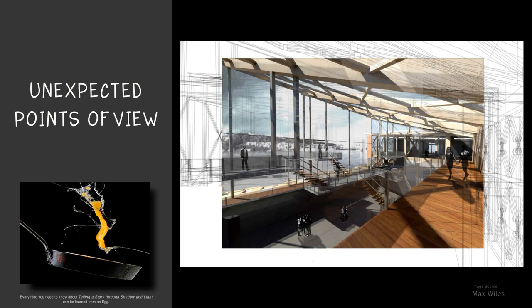In this perspective drawing by student Max Wiles, the composition integrates both line and render drawings. Notice how projected shadow as well as shade are used to direct the eye to the one-third point of the composition. Shading is also used to add weight to the lower half of the image, creating balance.